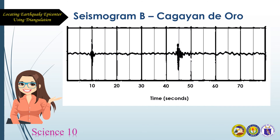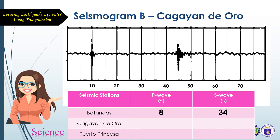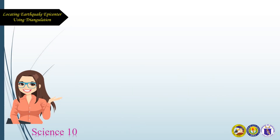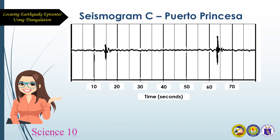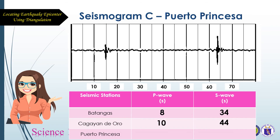Here is seismogram B for Cagayan de Oro. The hypothetical P wave for Cagayan de Oro is 10 seconds and the S wave is 44 seconds. For seismogram C for Puerto Princesa, the hypothetical P wave is 14 seconds and the S wave is 64 seconds.